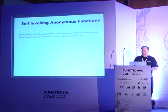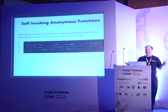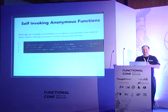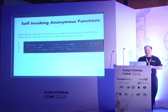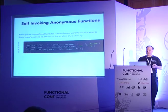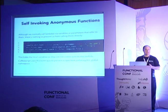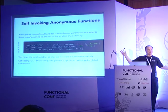Self-invoking anonymous functions: this is when you create a lambda and then call it right away. Why might we want to do that? It's about local variables — if this isn't a lambda, these local variables will persist past the execution of this code. But because it's a lambda, they are local to the lambda and don't exist anymore after the lambda has finished running. That can be pretty handy. In fact, CoffeeScript uses this exact technique so that when you write a CoffeeScript script, you're not polluting the global JavaScript namespace with your variables.